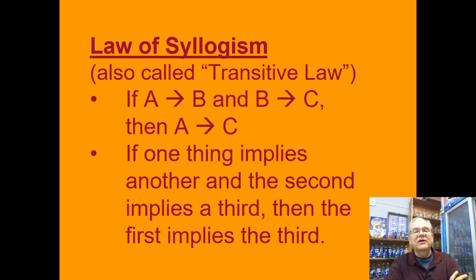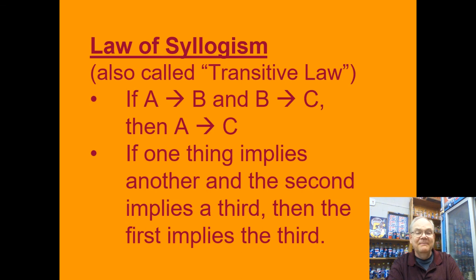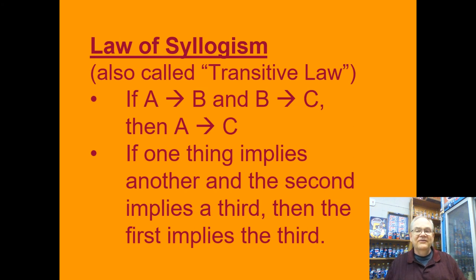The other rule is what your book calls the law of syllogism — your book is one of the few places where you'll see that particular term, but because they use it, that's why it's here. In a lot of other places they'll call the same rule the transitive law. The dead giveaway when looking at examples is there's always a bunch of if-then statements — if it's big and long, it's probably going to be syllogism. It says: if A implies B and B implies C, then A implies C. If the second thing, then a third — you can cut out the middle and say the first thing implies the third.